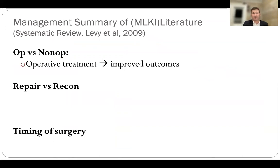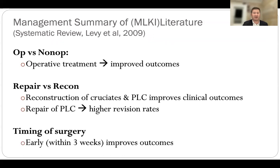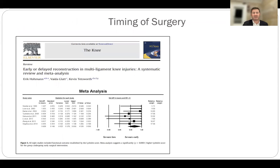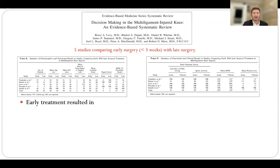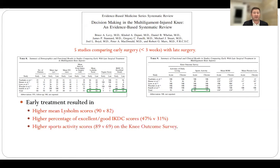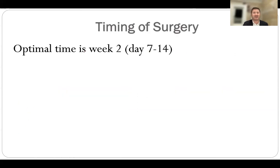The management summary: for ligament injury, operative treatment does better than non-operative; reconstruction of the cruciates and posterolateral corner does better than isolated repair; isolated repair has higher revision rates; and early surgery does better than delayed surgery. Kevin Tetsworth's paper nicely shows that early surgical intervention in multi-ligament injuries including the posterolateral corner produces significantly better results compared to late reconstruction. Bruce Levy's group looked at five studies and showed higher Lysholm scores, higher percentage of good-to-excellent results, and higher sports activity scores with early surgery.